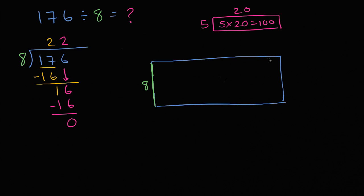So maybe it looks something like this. One way to think about it, that this section right here has an area of 170, and then this area right over here would be 6. The total area is still 176.